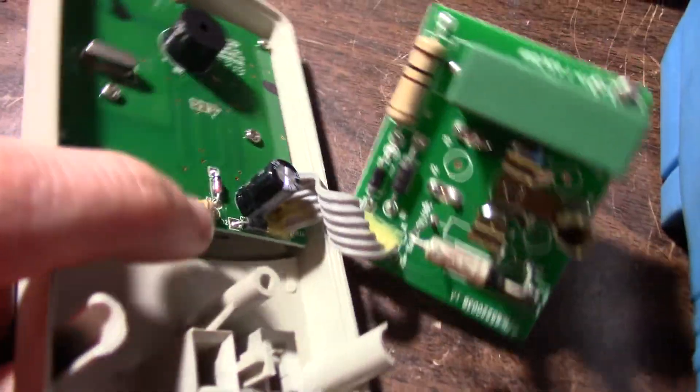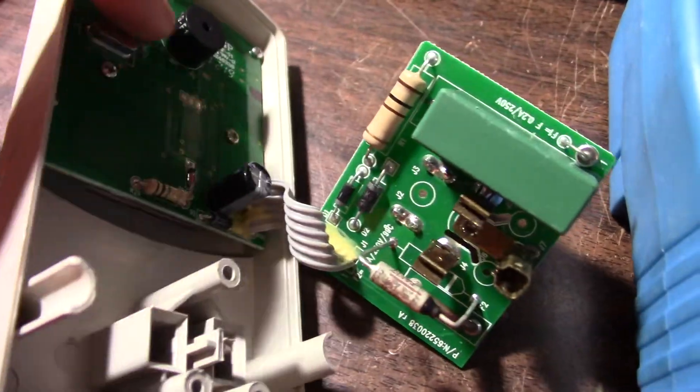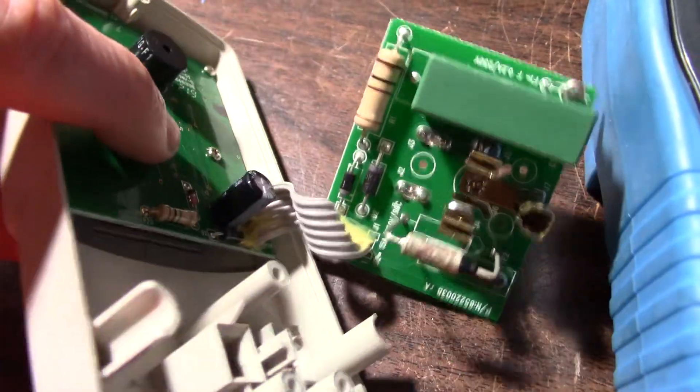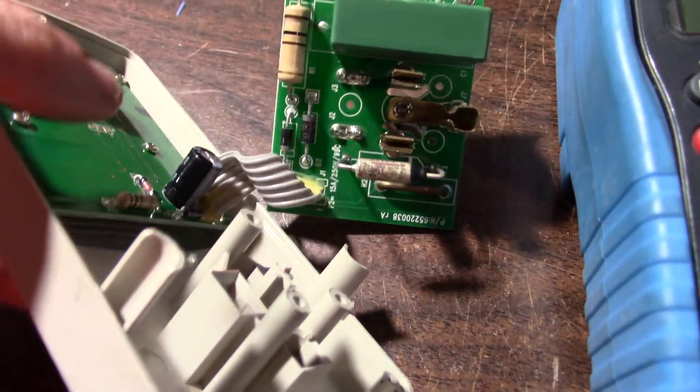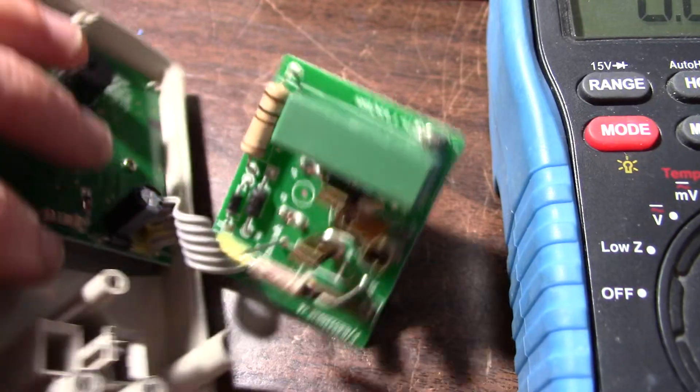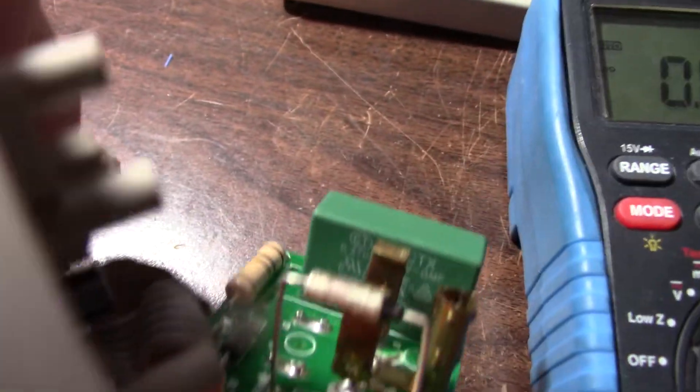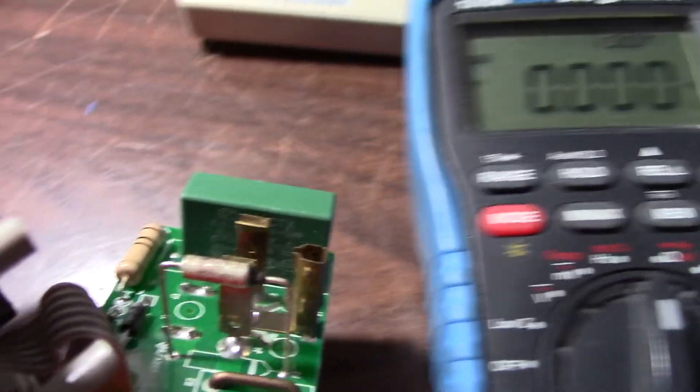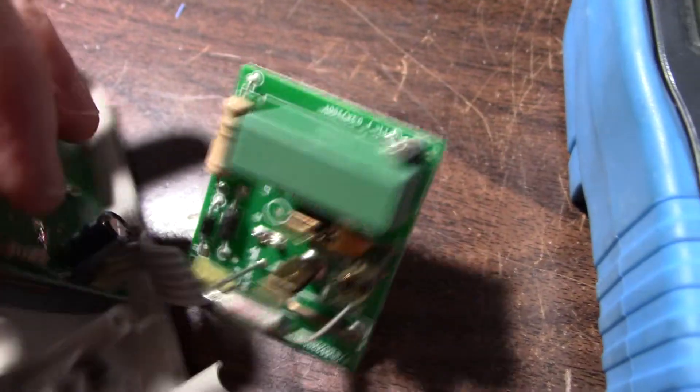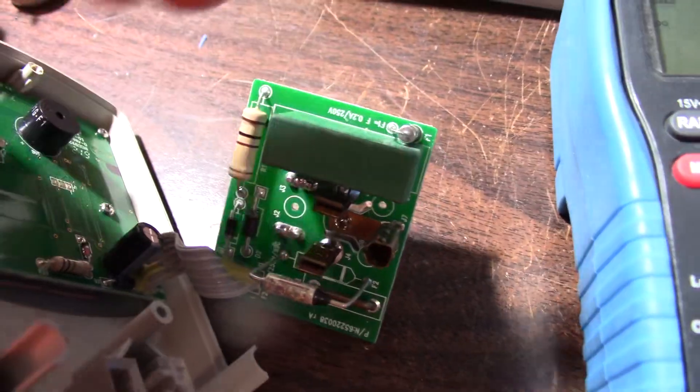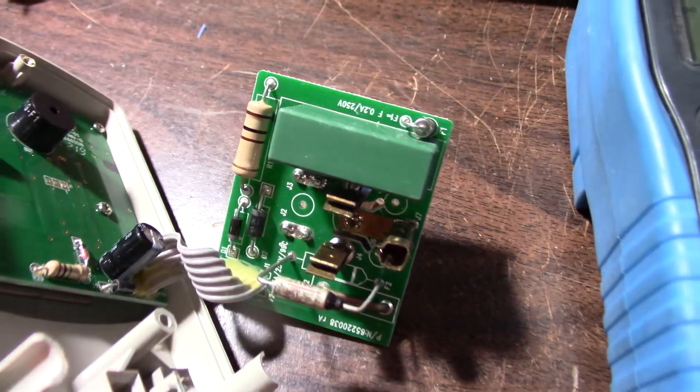I took the meter and went through all the components that I have access to, measured them in circuit. I didn't take this board out or anything. Everything checks good except for this green capacitor. It's supposed to be 0.47 microfarads and it measures 0.29.